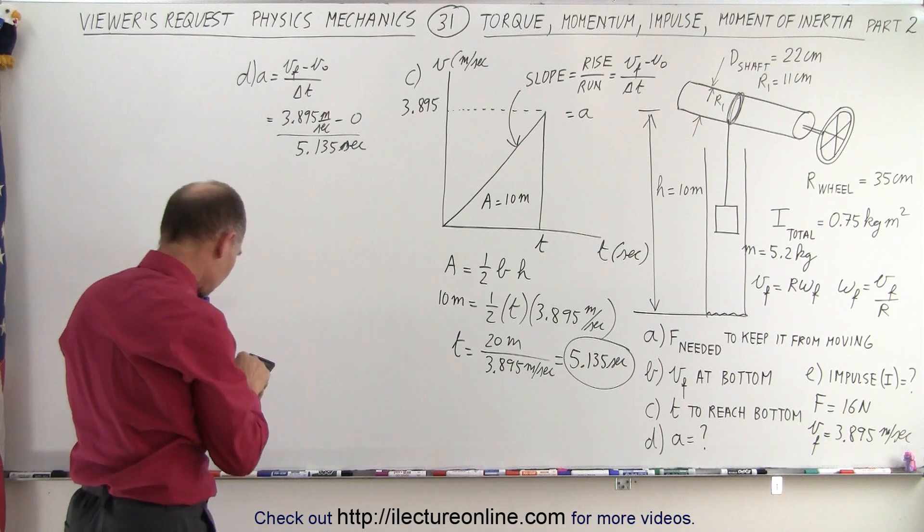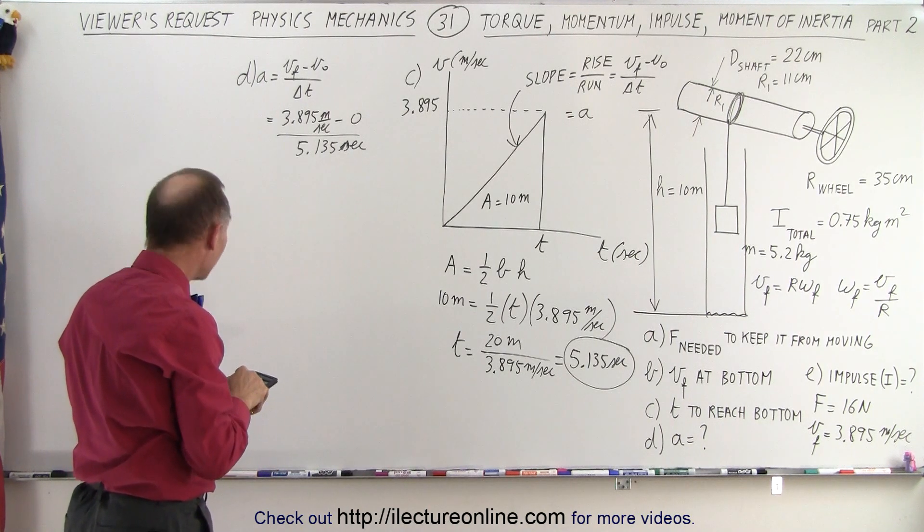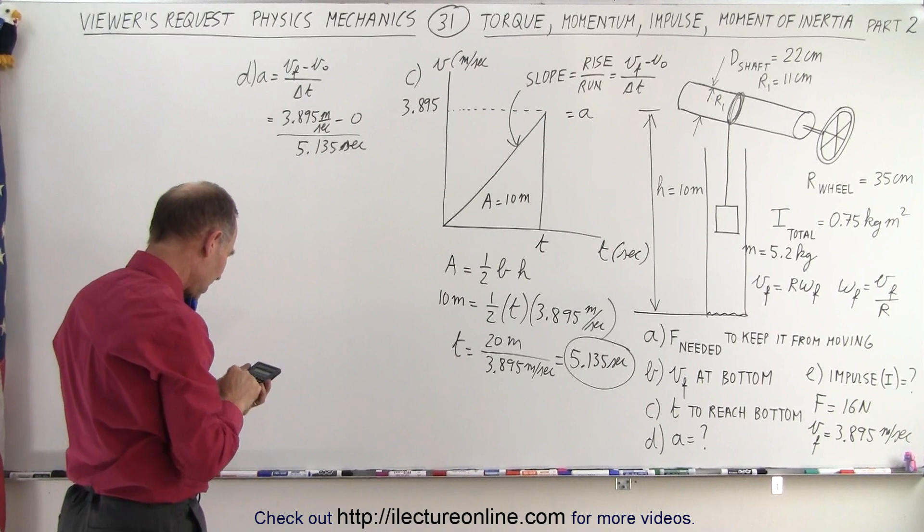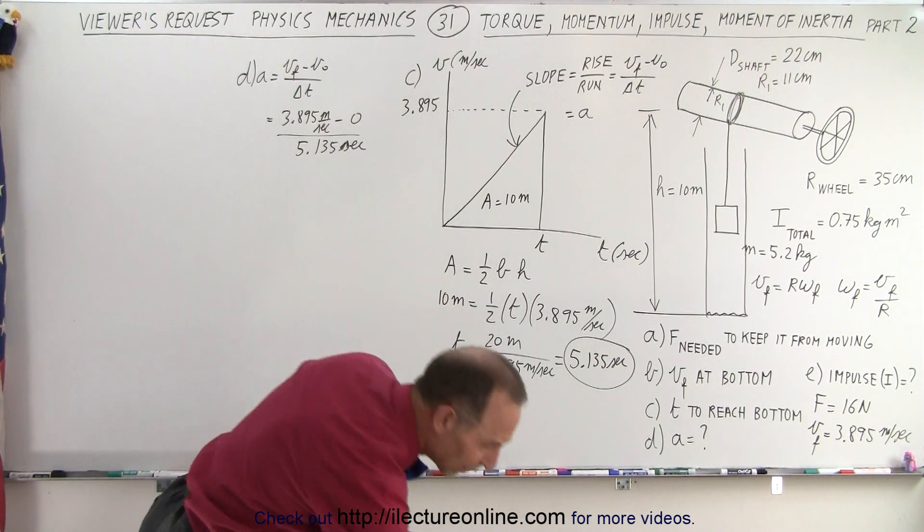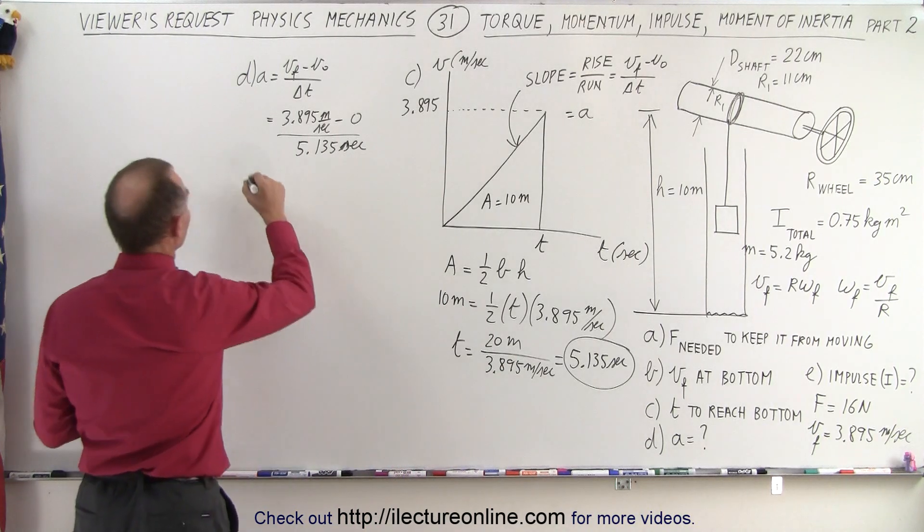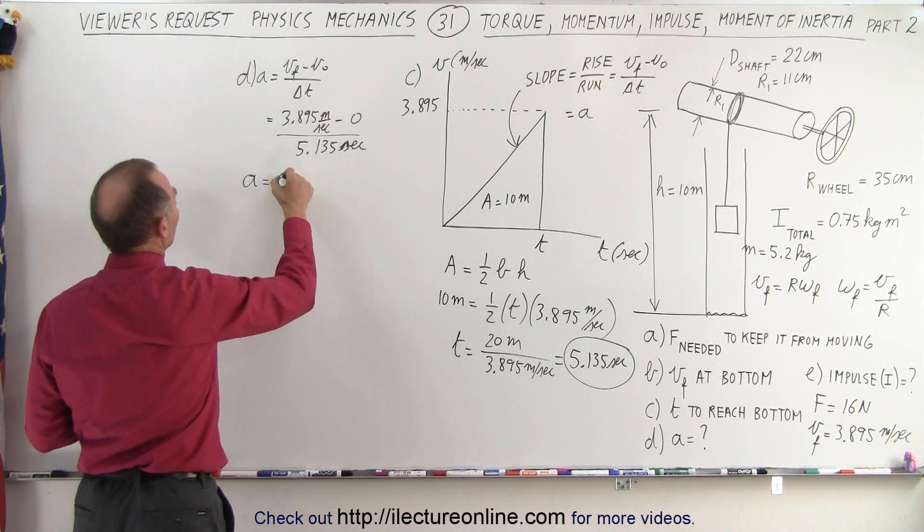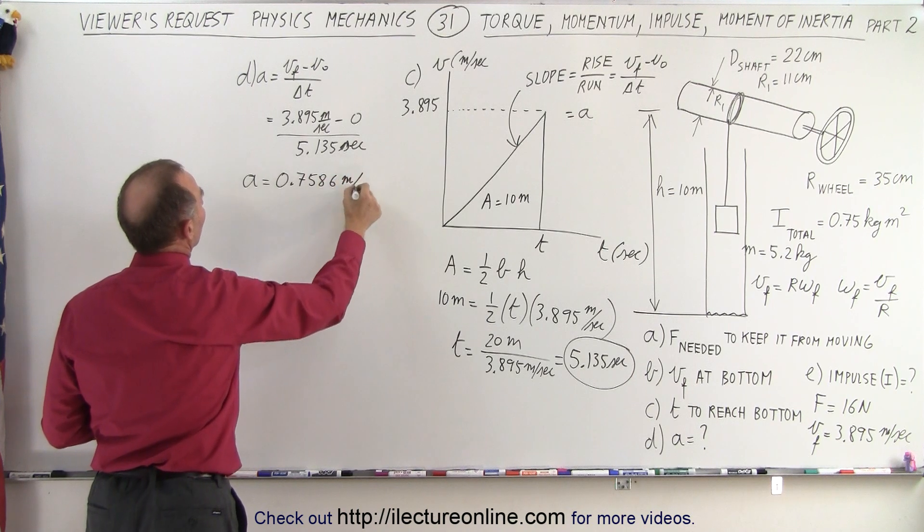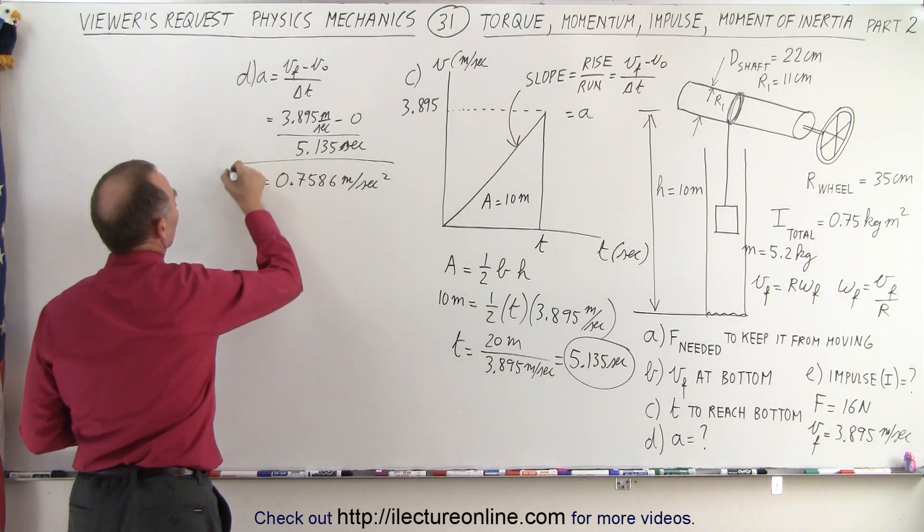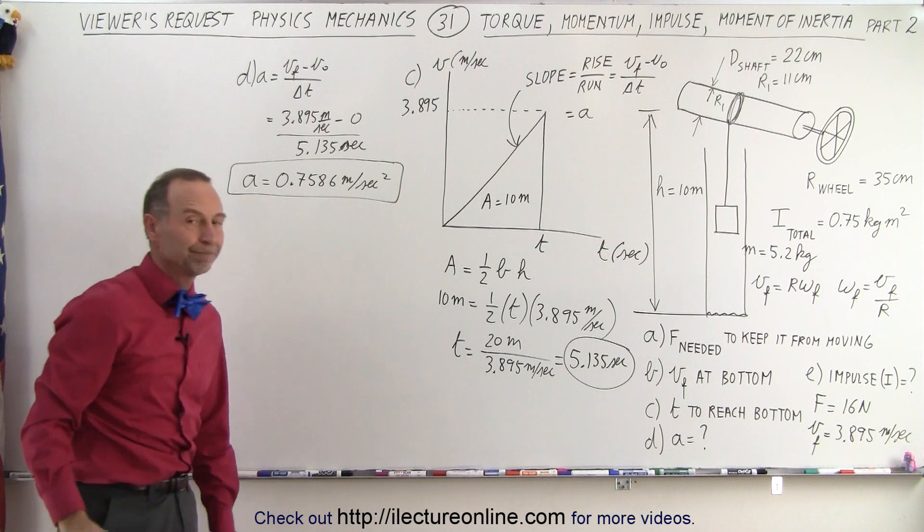Let's see here. So take the inverse of that times 3.895 equals, and we get 0.7586. 0.7586. A equals 0.7586 meters per second squared. So now we also have the acceleration.